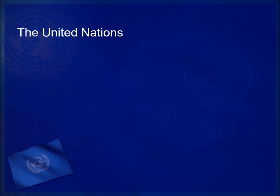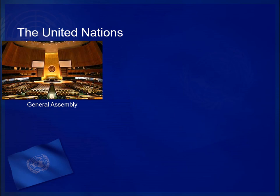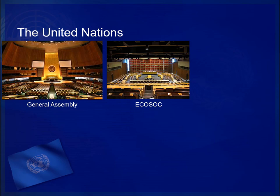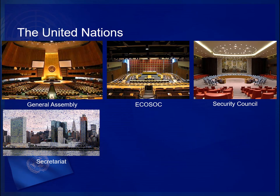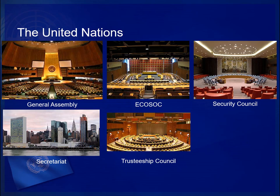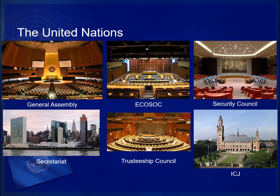The United Nations Charter outlines six principal organs within the organization. These are the General Assembly, or GA, which serves as the principal deliberative assembly; the Economic and Social Council, or ECOSOC, which focuses on international economic and social affairs; the UN Security Council, which has primary responsibility for addressing threats to international peace and security; the Secretariat, which is the administrative arm responsible for day-to-day affairs; the Trusteeship Council, now largely defunct, which oversaw decolonization efforts; and the International Court of Justice, which adjudicates disputes between states and offers legal opinions.